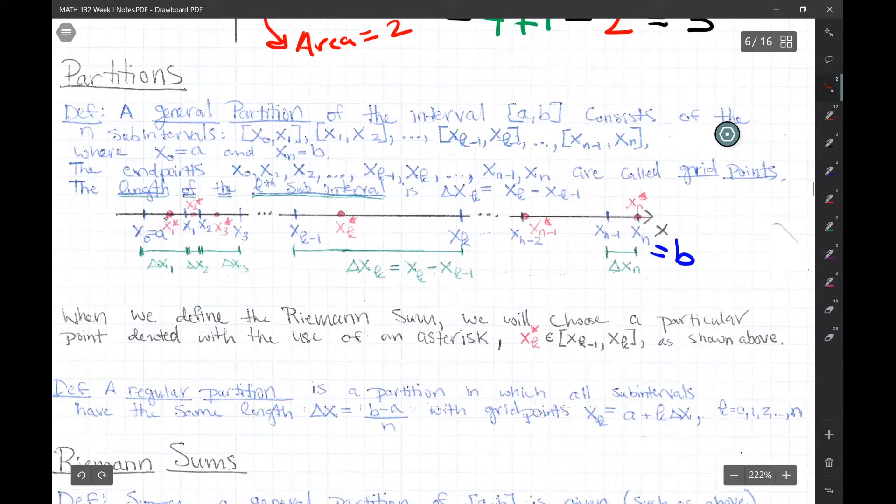So each of these could have different lengths. You could see here that this length is different than this length here, and this is particularly long between xk minus 1 to xk, and so they could have different lengths when you're dealing with general partitions.